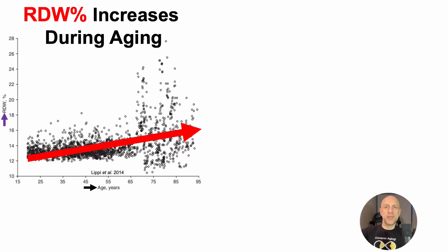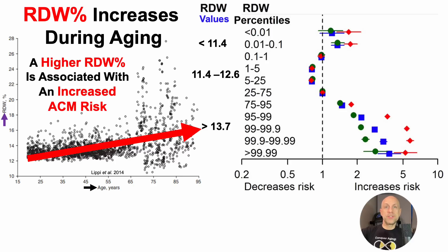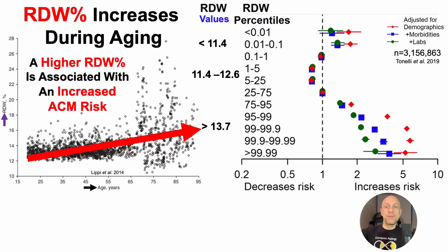The significance of the age-related increase is that a relatively higher RDW is associated with increased all-cause mortality risk. There are different colored shapes on this plot representing different model adjustments. What matters most is the fully adjusted model — the data in green — which included adjustments for demographics, morbidities, and other lab values. Note that this is a study of 3.2 million people; if anyone has come across a larger study, please post it in the comments.